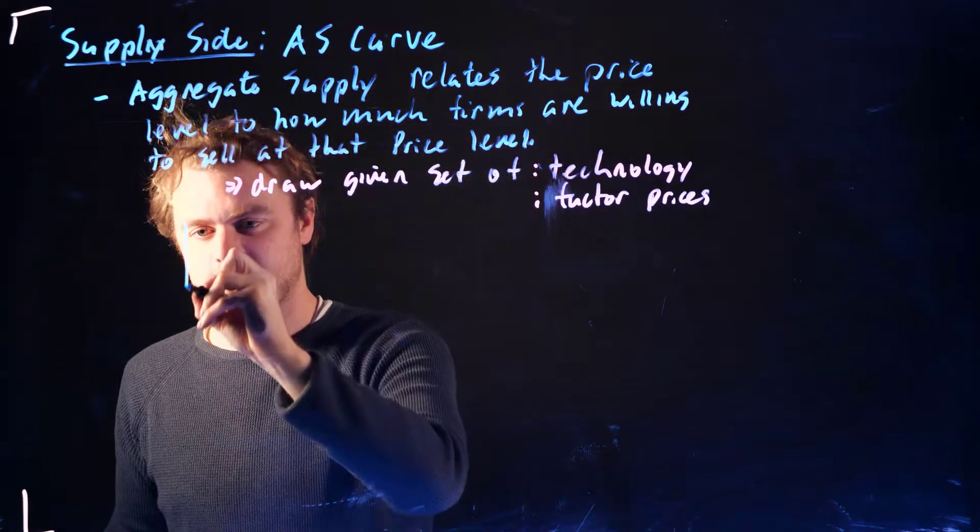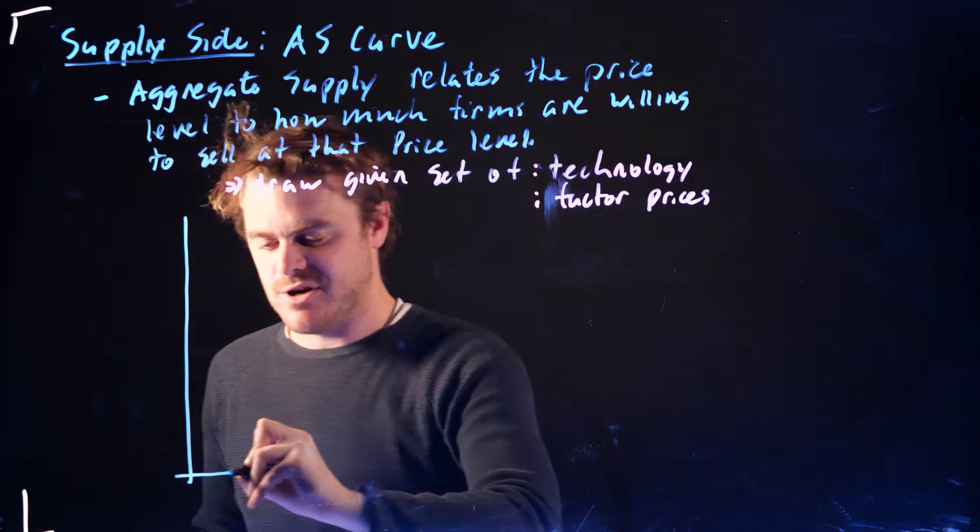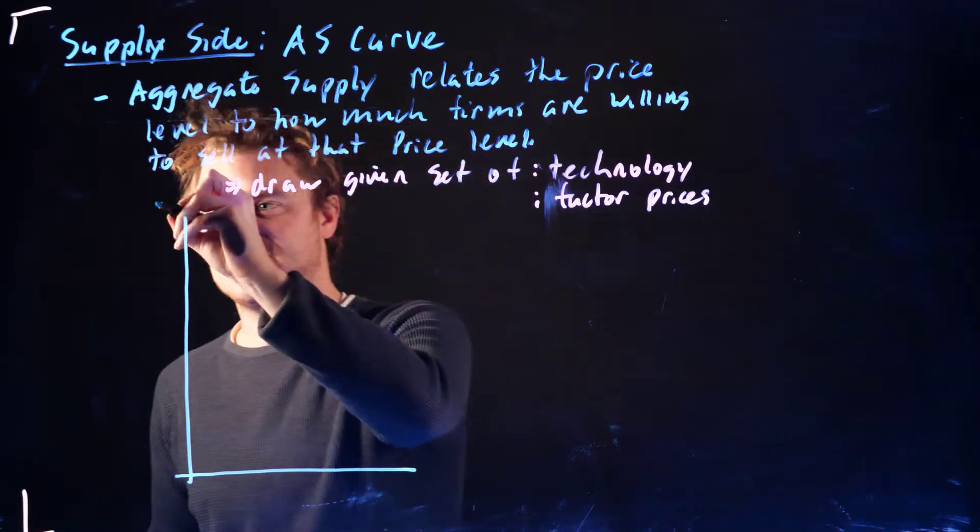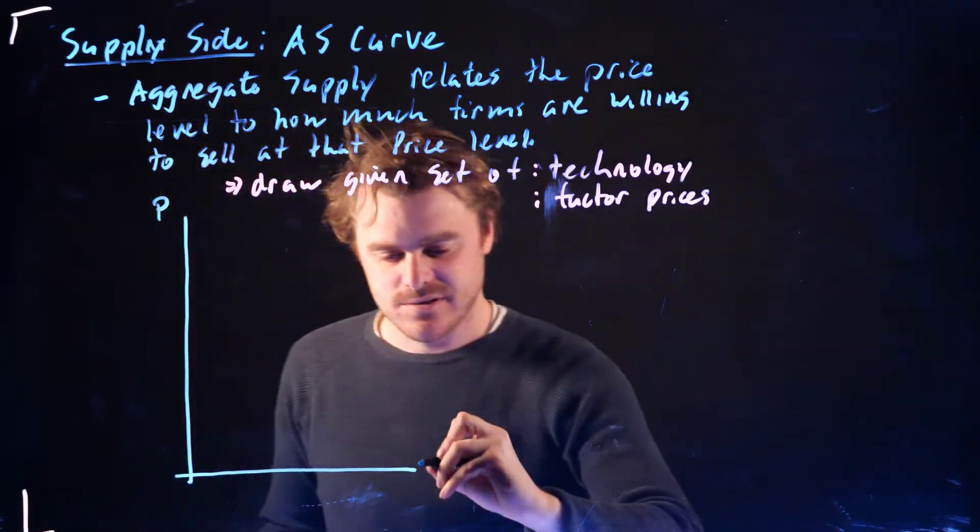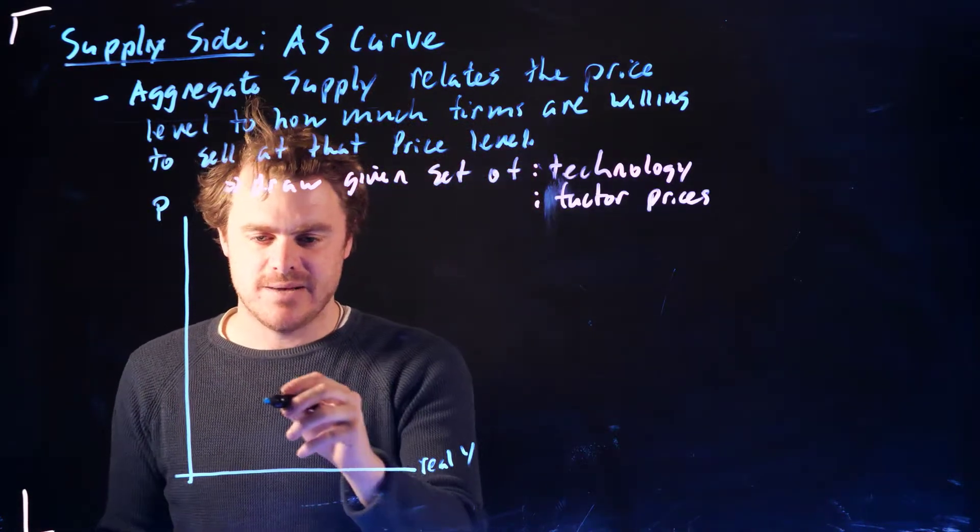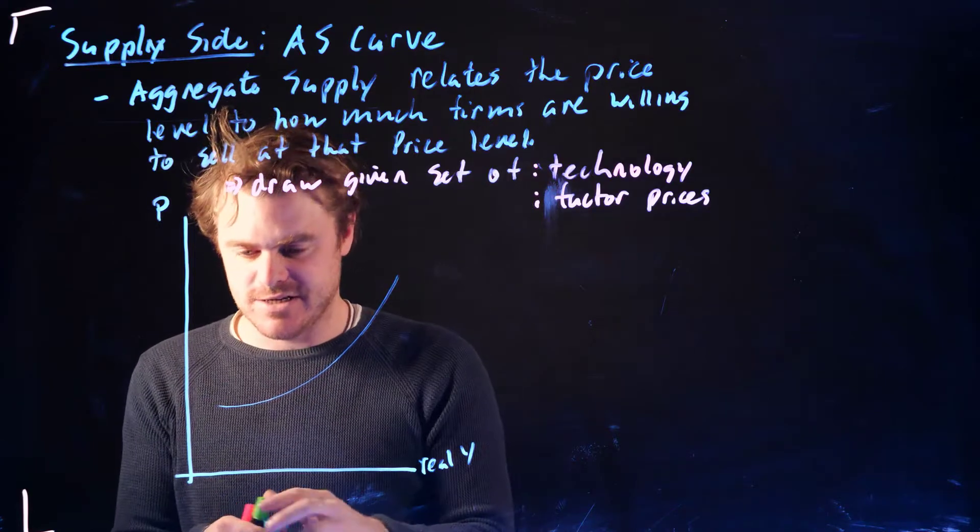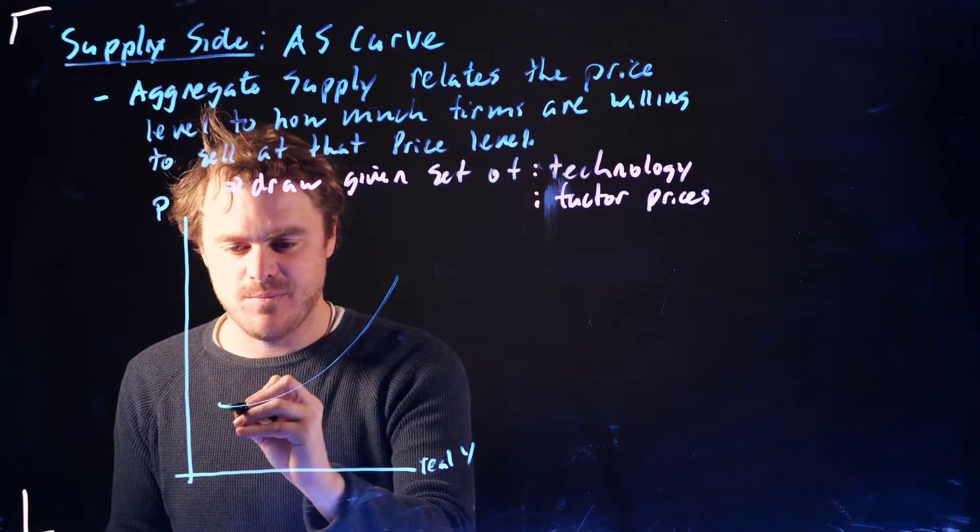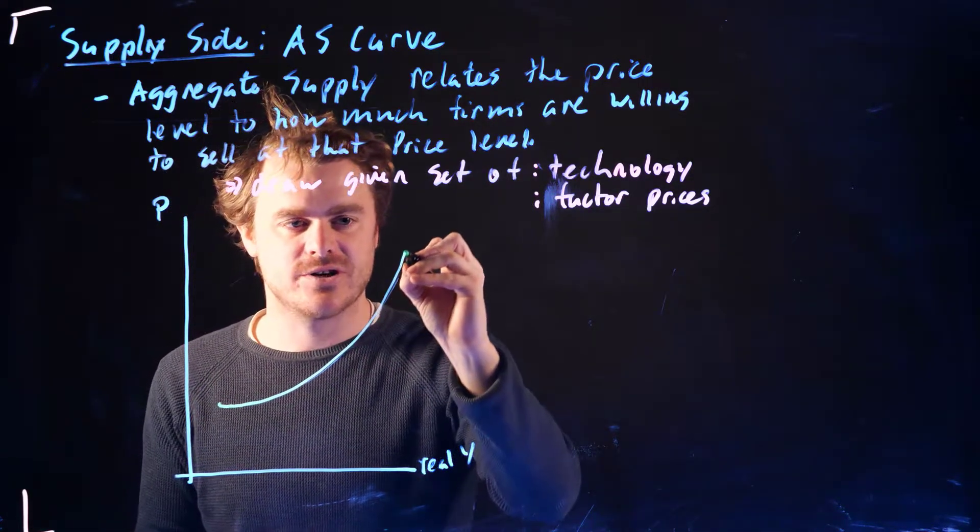Alright, so the axes are the same as our aggregate demand curve, perhaps that's not too surprising, price level and real Y. And we're going to make this assumption that we have this upward sloping, maybe it's not a crazy assumption, this upward sloping AS curve.